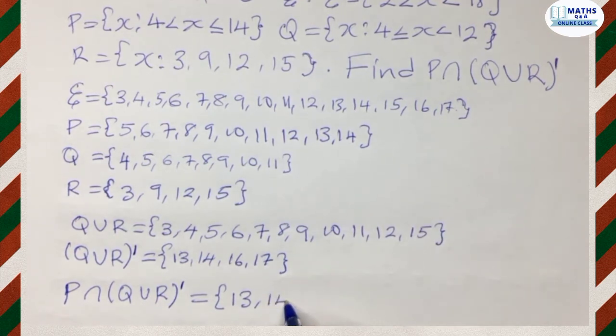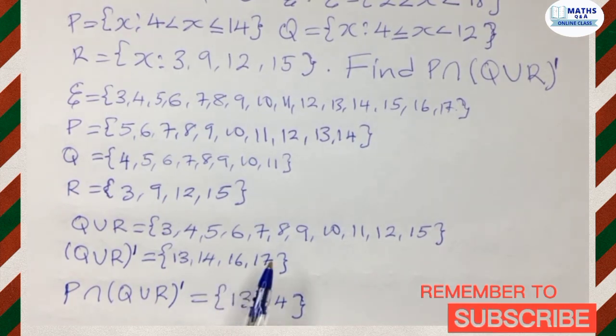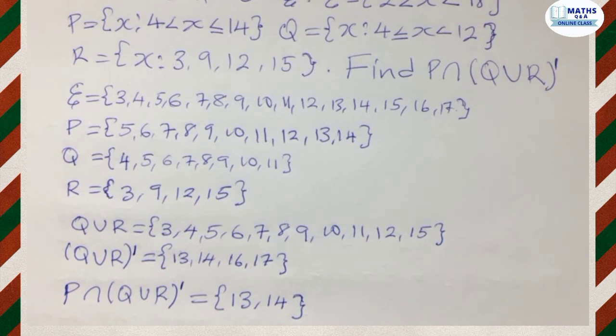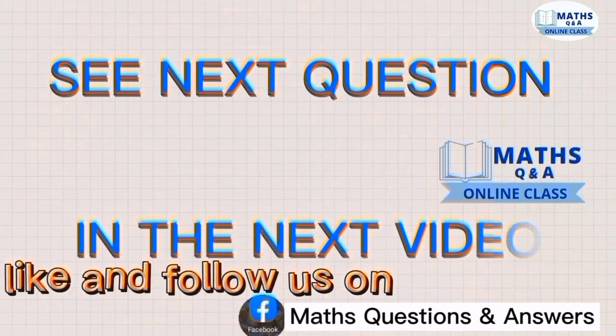14 is also appearing. So we have 14 appearing in both sides. That's complete in the set. Why? Because we don't have 16 in P, we don't have 17 also in P. So that completes the set of elements for P intersection Q union R complement. 14.